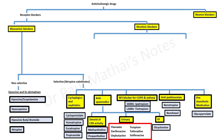Regarding the nicotinic blockers, these include NM receptor blockers and NN receptor blockers. Although not classically described as anticholinergic drugs, NM receptor blockers are strictly speaking anticholinergic — at least anti-nicotinic — although they have no anti-muscarinic actions.